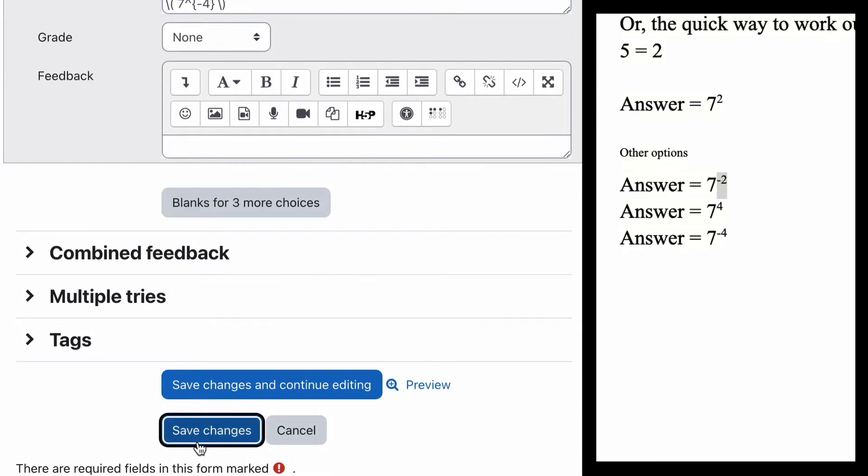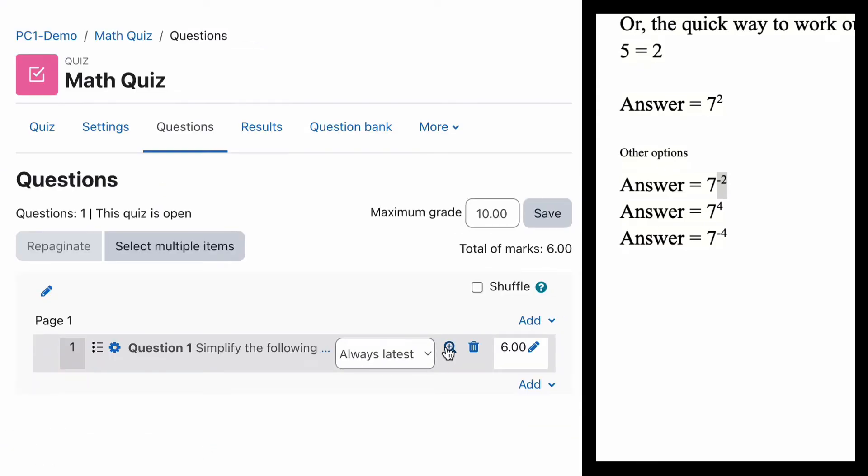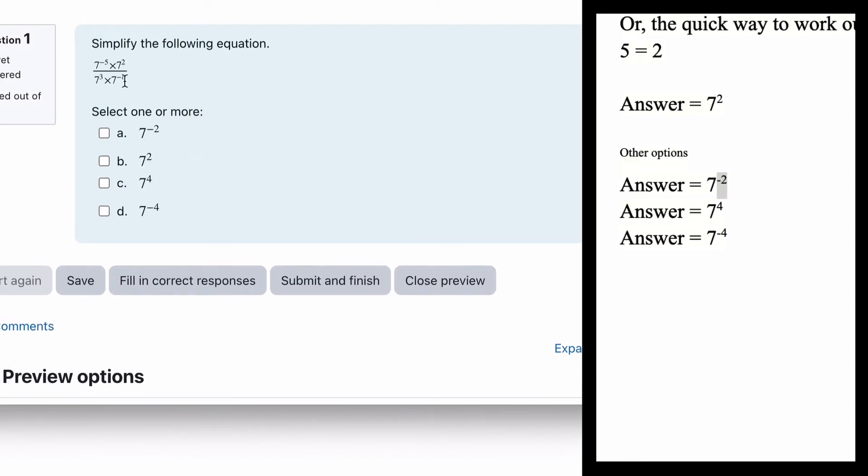If we now save changes. And preview. We now have our question. Simplify the equation. And then we have our possible answers. 7 to the minus 2. 7 squared. 7 cubed. And we choose which one is correct. And we have the correct answers.